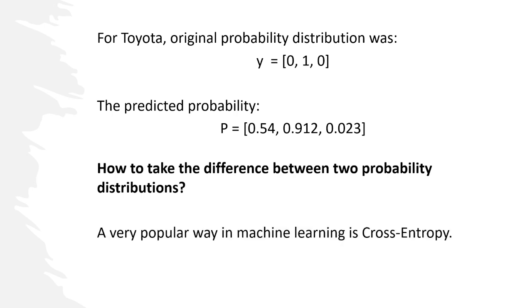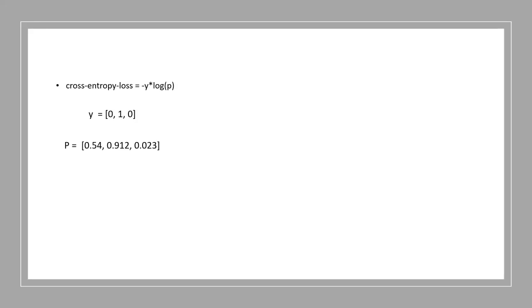A very popular way in machine learning is cross-entropy. Now let's see how we can calculate cross-entropy. This is the formula for cross-entropy loss: cross-entropy loss is minus y times log of p. And you can see y is 0, 1, 0, and p is this one for our training example.